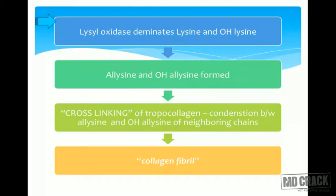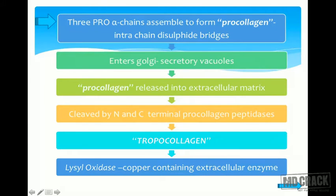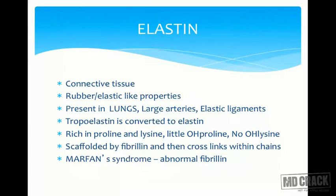To summarize in flowchart form: DNA transcription produces mRNA; ribosome translation produces the pre-pro-alpha chain with a signal sequence; it goes to the ER where the signal sequence is cleaved to give the pro-alpha chain; prolyl and lysyl hydroxylases cause hydroxylation (requiring vitamin C); glycosylation with glucose and galactose follows; three pro-alpha chains assemble into pro-collagen with intra-chain disulfide bridges; pro-collagen enters the Golgi and secretory vacuoles; it is released into the extracellular matrix, cleaved to form tropocollagen; lysyl oxidase forms allysine and hydroxyallysine cross-links; and the collagen fibril is formed.